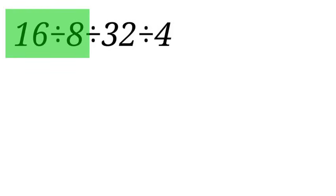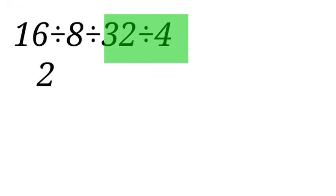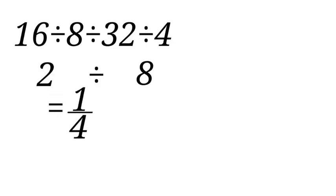First, we say 16 divided by 8, we have 2. 32 divided by 4, we have 8. So we now have 2 divided by 8, which is the same as 2 over 8. When we divide, we have 1 over 4.